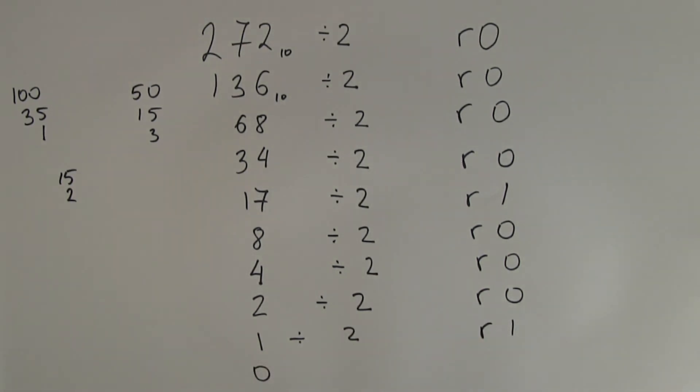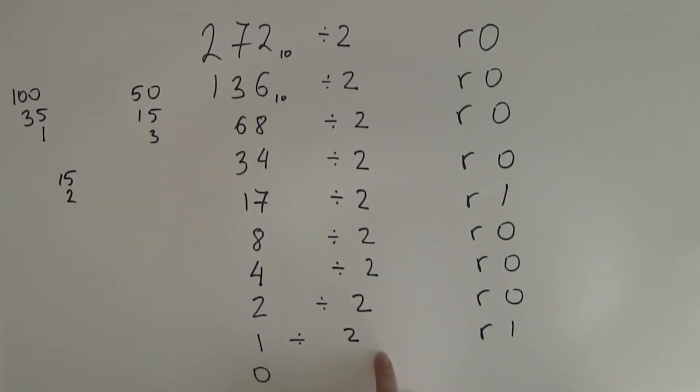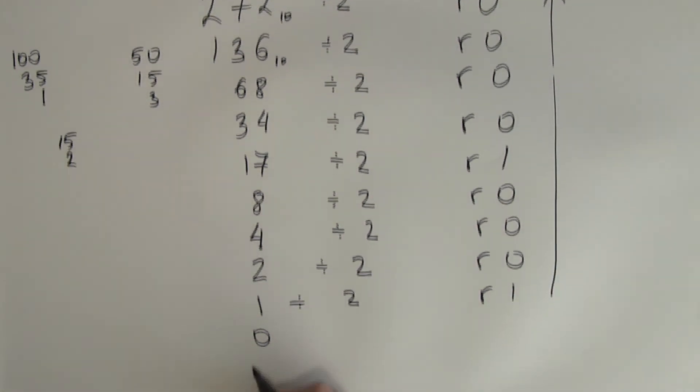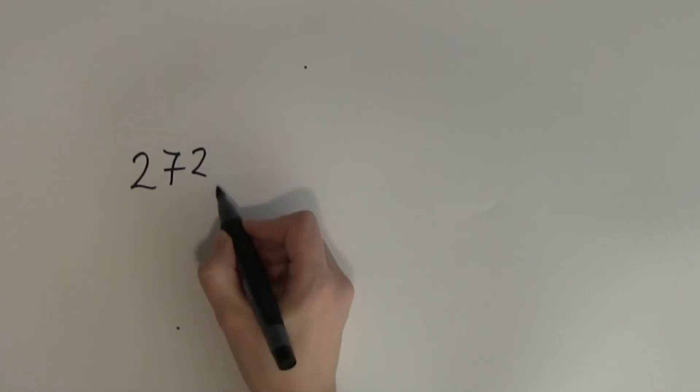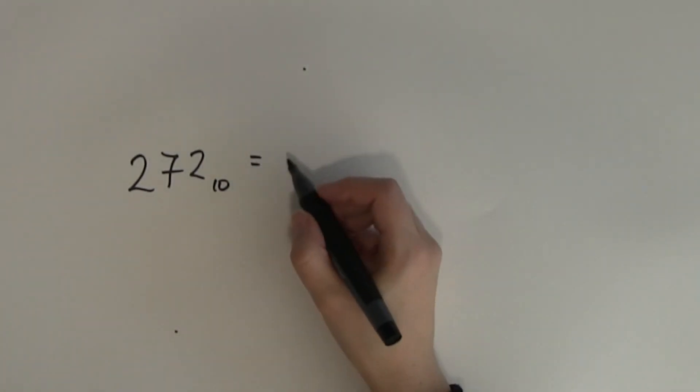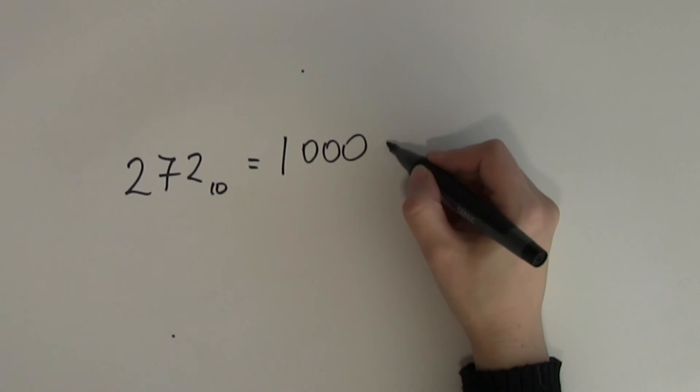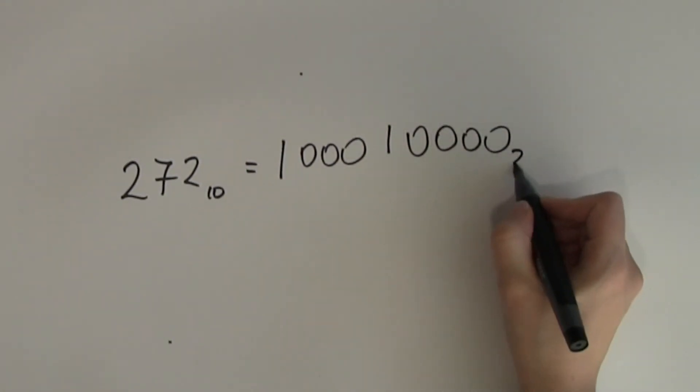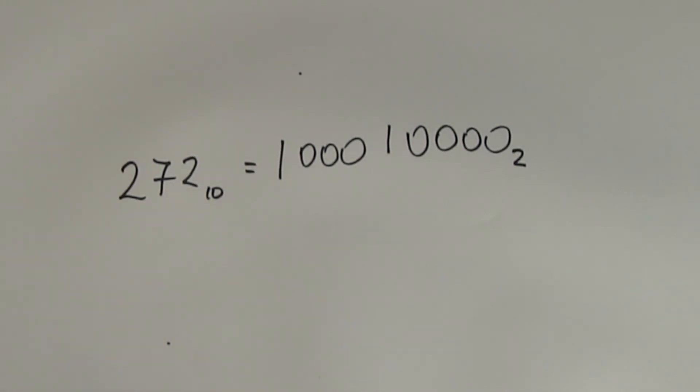Again I have to stress that you haven't finished at this point of the algorithm because you need to go until you have got 0 as the answer for the division. So copy the digit bottom up. 272 in decimal is equal to 1 followed by 3 zeros and 1 followed by 4 zeros in binary. Now that number looks slightly suspicious so let's double check that this is actually the correct number that we wanted.